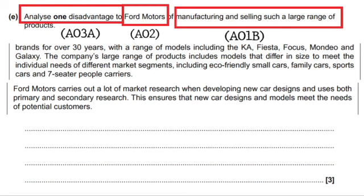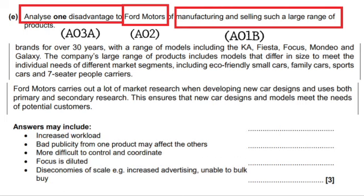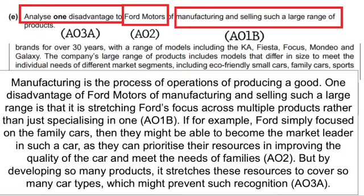After looking at the case study again and picking out key information about their range of products and car designs, I started with a definition: 'Manufacturing is the process of operations of producing a good.' Then: 'One disadvantage of Ford Motors in manufacturing and selling such a large range is that it's stretching Ford's focus across multiple products rather than just specialising in one.' That's my AO1B. For AO2: 'If Ford simply focused on family cars, they might become the market leader as they can prioritise resources in improving quality and meet the needs of families.' And for AO3A: 'By developing so many products, it stretches these resources across so many car types, which might prevent such recognition.'